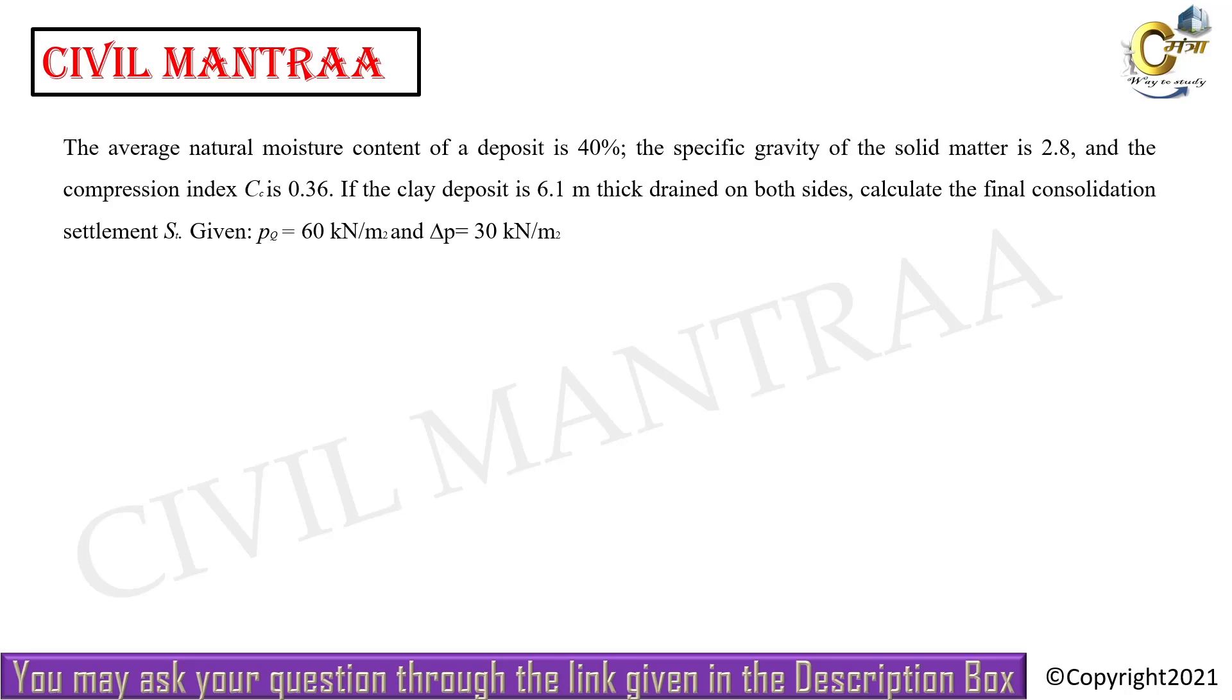Hello students, welcome to Civil Mentor. The question is: the average natural moisture content is given, specific gravity is also given, compression index CC value is given, clay layer is 6.1 meter thick drained on both sides. Calculate the final settlement where p0 and del p is also given. So if you know the formula, what is del h?